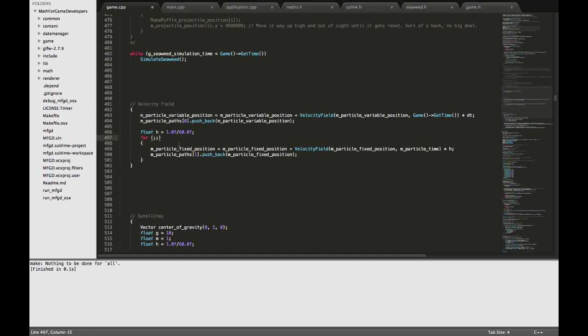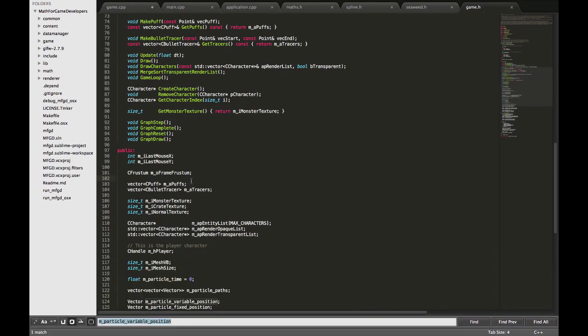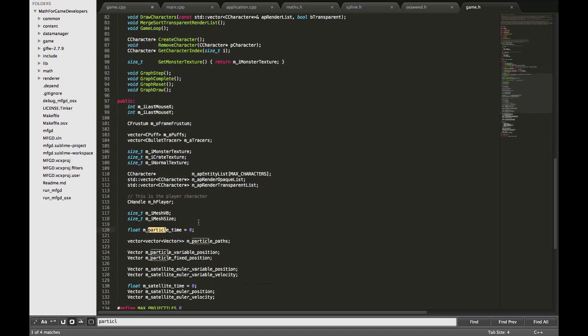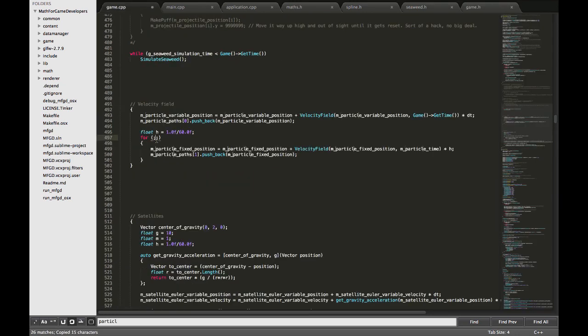I have some code over here that we're going to use. So we're going to fix our time step. H is a special variable that is always one over 60. We're going to do this 60 frames per second. I have a special particle time variable that keeps track of, it's a special simulation time that represents the particles simulation.